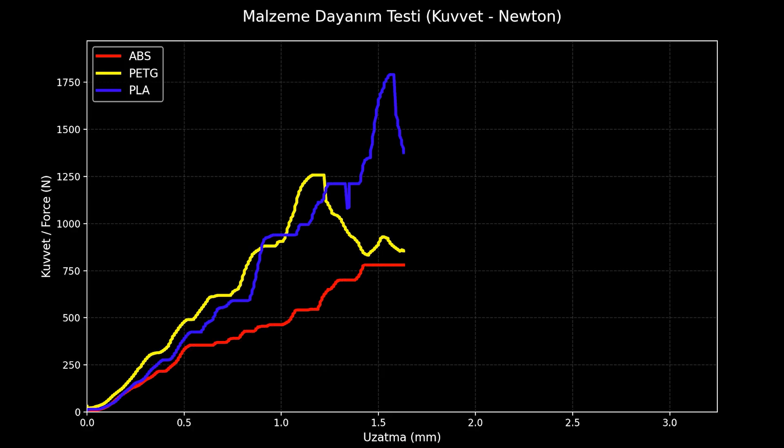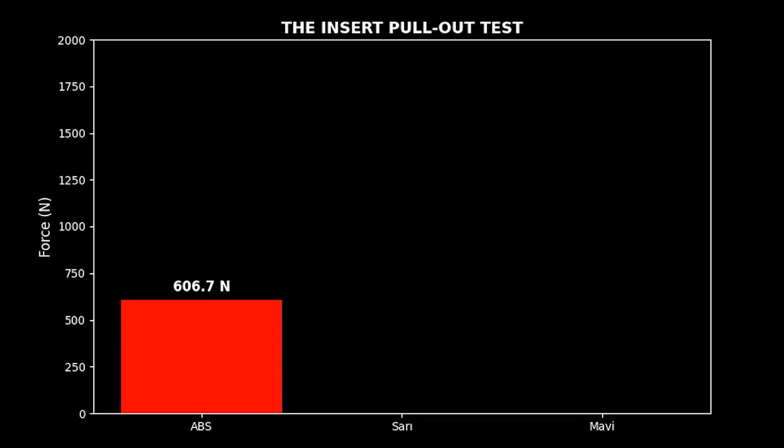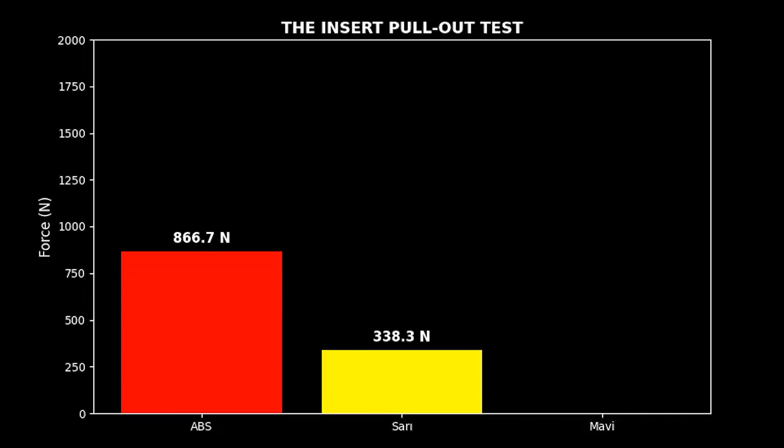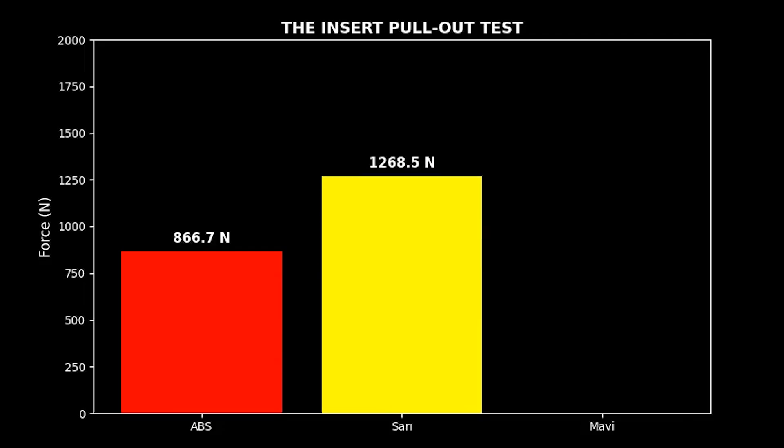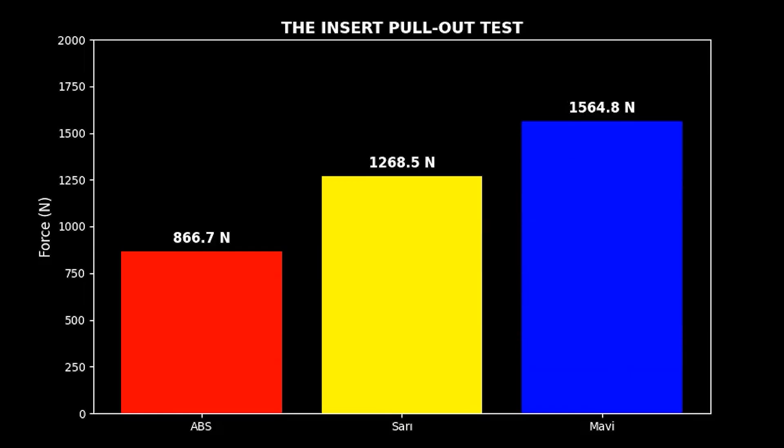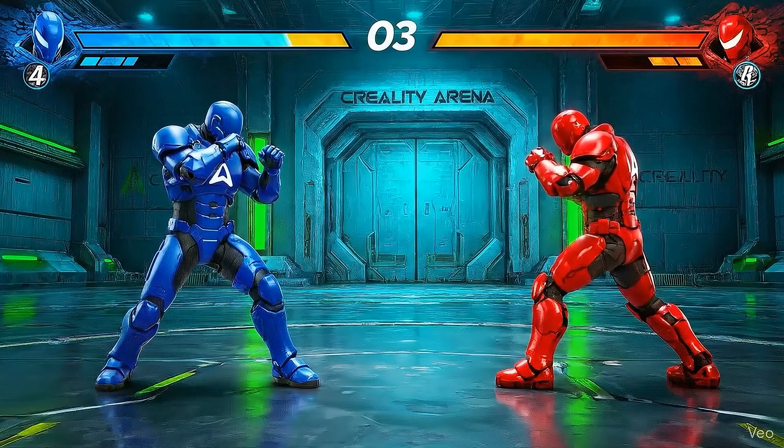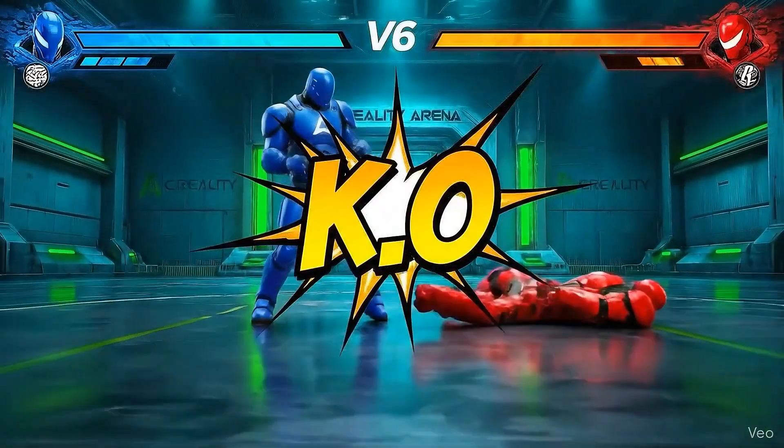Let's look at the final scores. ABS, we thought heat would bond better. But unfortunately, 866.7 Newtons. It failed the class. PETG, good bond, good grip, 1,268.5 Newtons. And PLA, forget gripping. It's like it was glued. With a force of 1,805.5 Newtons. The winner of this round is PLA.